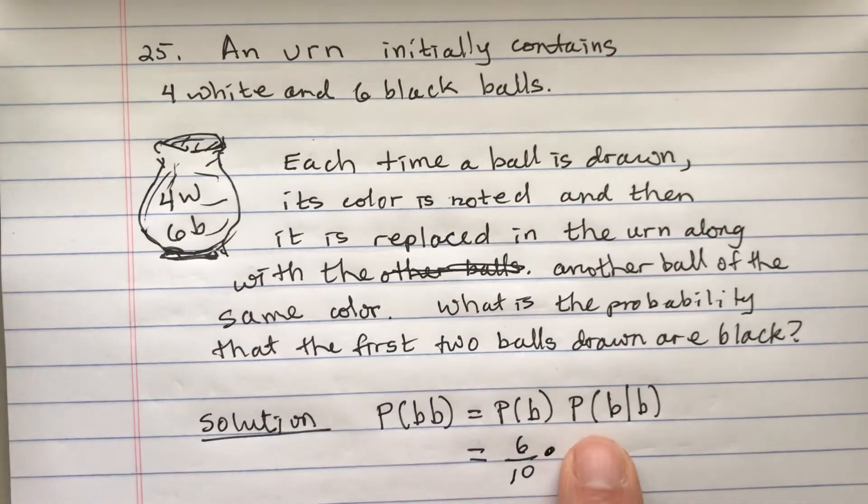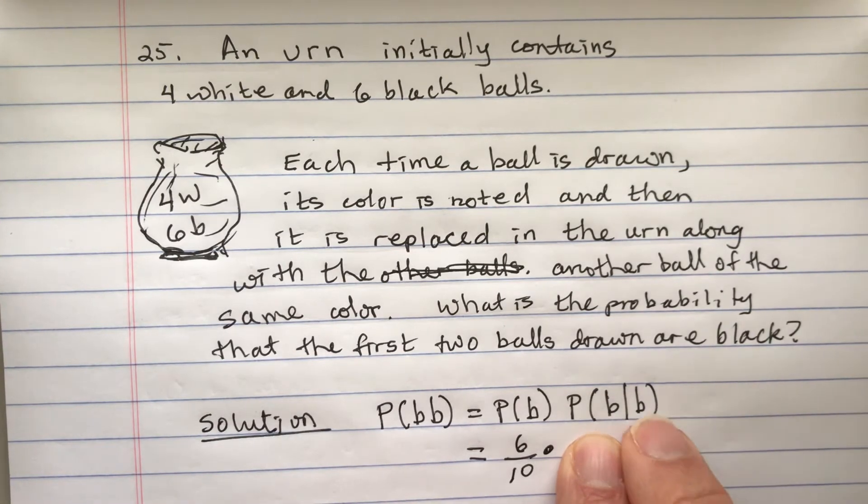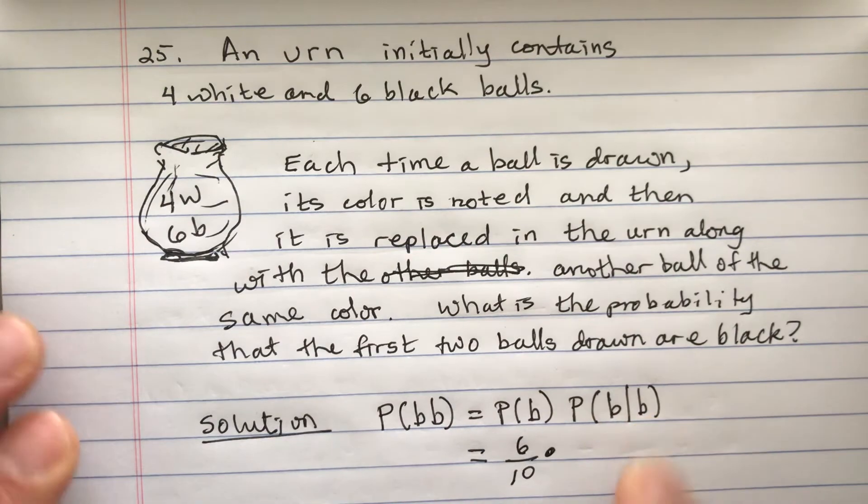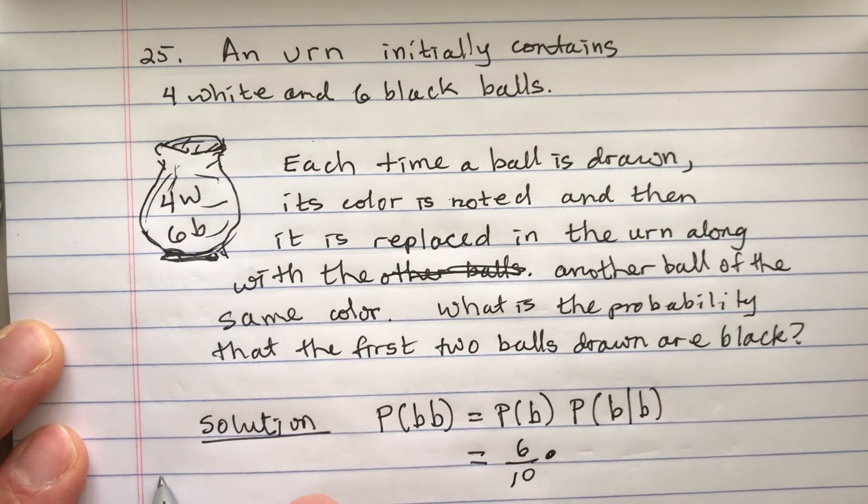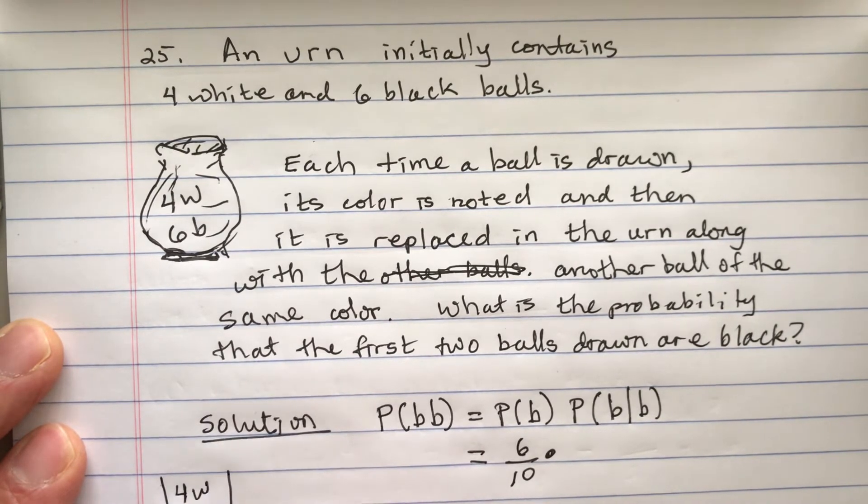Now what's the probability that we get a black on the second time given that we drew a black? So what's happening here is that you have this urn with four whites and six blacks, and then we are going to draw a black.